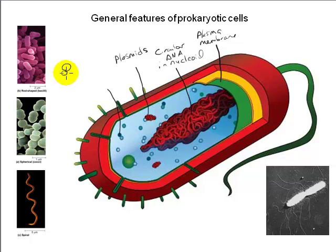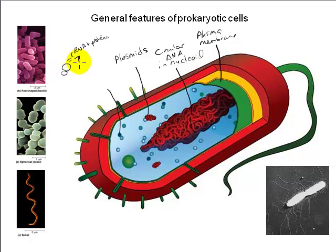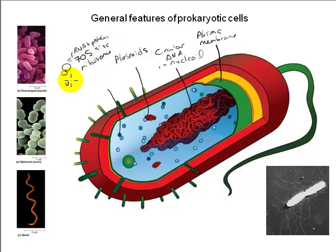Ribosomes would be present in the cytoplasm and, like in all cells, would be composed of two subunits, each a complex containing several ribosomal RNA molecules and dozens of individual polypeptides. Prokaryotic ribosomes, though similar in structure to eukaryotic ribosomes, are smaller in size and are referred to as 70S ribosomes. S stands for Svedberg unit — it measures the rate of sedimentation under centrifugal force. The smaller the molecule, the slower the rate. Eukaryotic ribosomes are 80S.